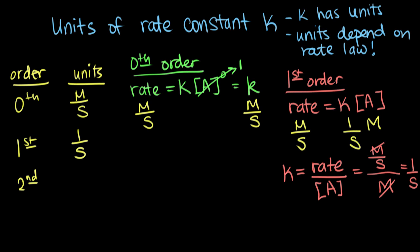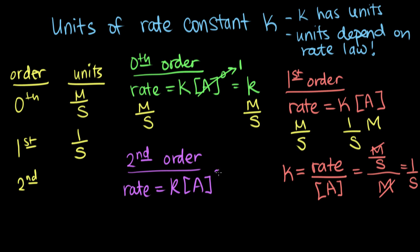The last example is for second order reactions. Second order rate laws have the form: rate equals k times the concentration of the reactant to the second power. On one side we have molar per second, and on the other side, since concentration is squared, we have molar squared. So molar squared times something equals molar per second. We need 1/seconds in the units of k, and we need to cancel one concentration term, so molar goes in the denominator as well.